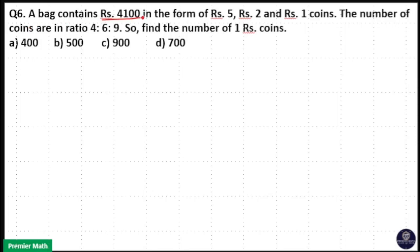A bag contains Rs. 4100 in the form of 5 rupee, 2 rupee and 1 rupee coins. The number of coins are in the ratio 4 to 6 to 9. So find the number of 1 rupee coins.